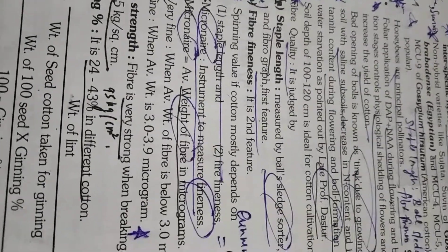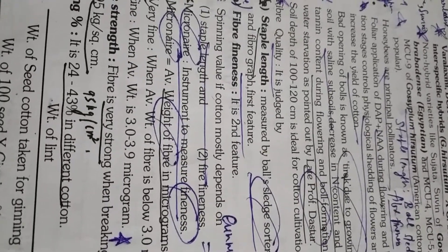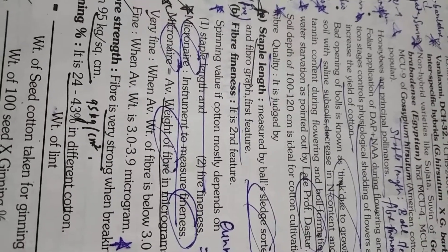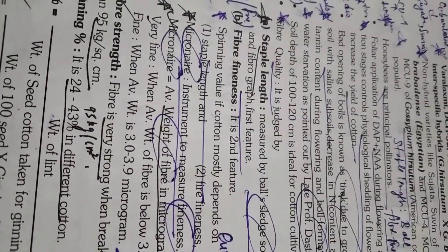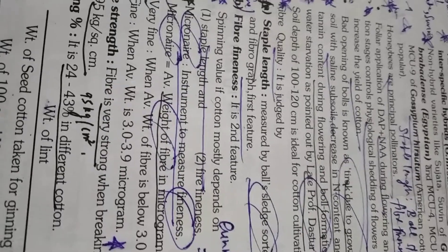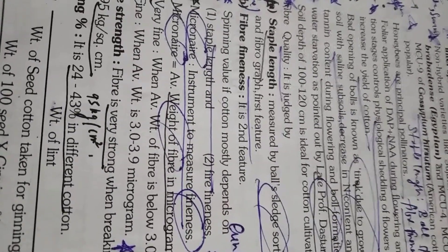In cotton you ought to remember some important instruments also. Like staple length is measured by ball slasher, fineness is measured by micronaire and micronaire gives average weight of fiber in microgram. And one is arealometer. Maturity of fiber is tested by arealometer. Please remember it.